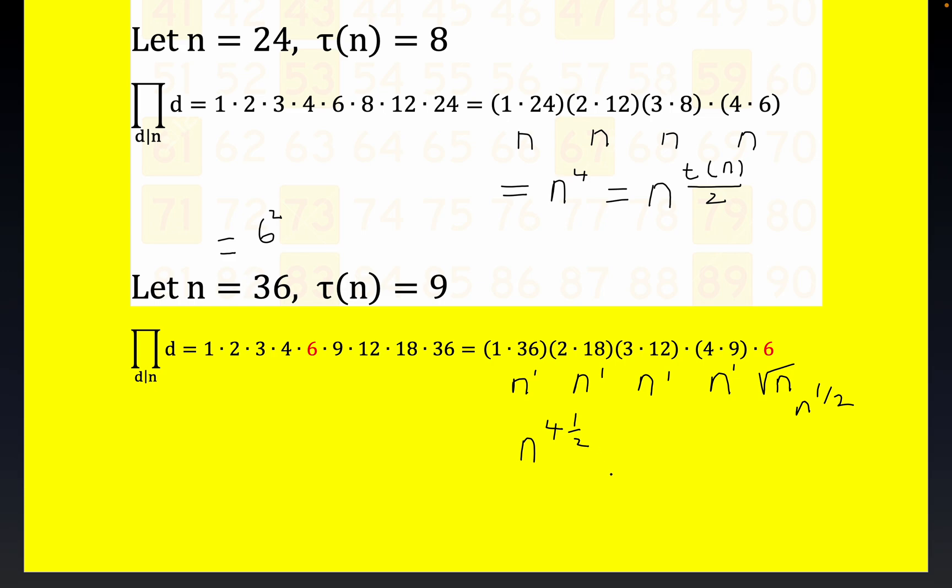So this is going to become n to the four and one half if you want to write that way, or more in keeping with our notation here, this is equal to n raised to the nine halves. But again, that's the very same thing as what we were trying to prove. That's n raised to the tau of n.